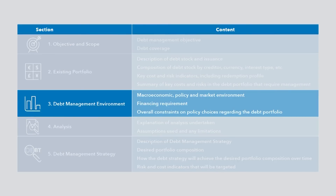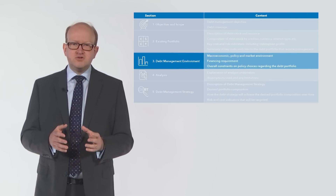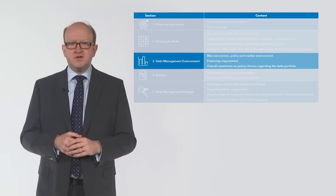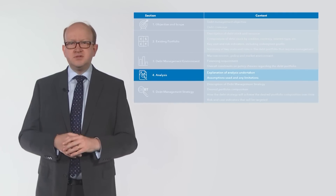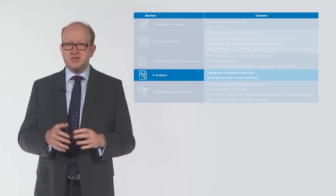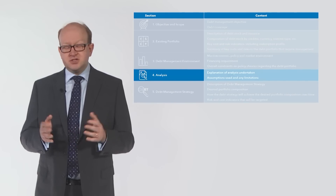The debt management environment section describes the environment the debt manager faces, including the availability of financing from different creditors and markets and the outlook for interest rates and exchange rates. It describes the fiscal outlook in terms of the implications for the borrowing requirement. Constraints on policy choices, including those related to domestic market development and shifts in the availability of different types of external financing, should be discussed. The analysis section provides a brief explanation of the types of analysis — both quantitative and qualitative — undertaken to support the decision on the approved strategy. It is not advisable to describe the various alternative or hypothetical strategies that were considered; if it is decided to disclose those details, this should be through a separate document such as a technical working paper.